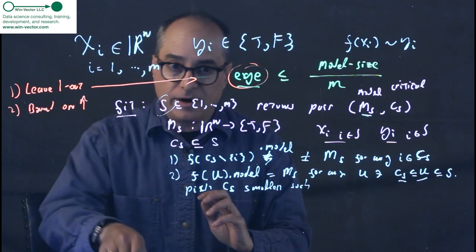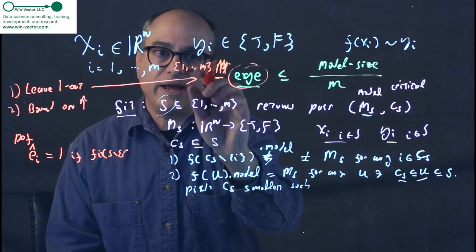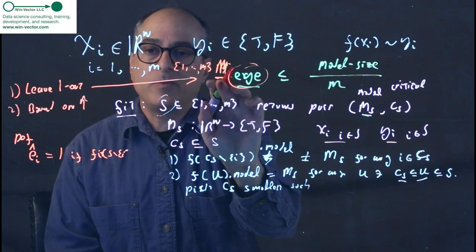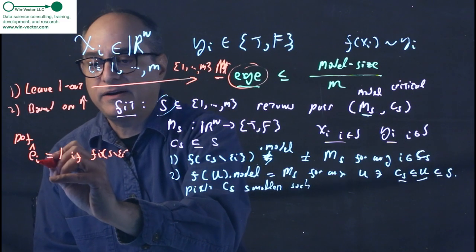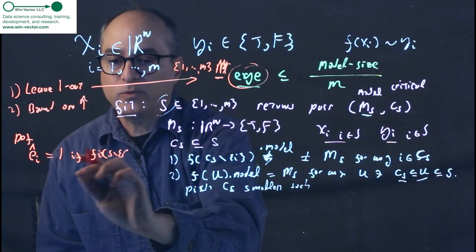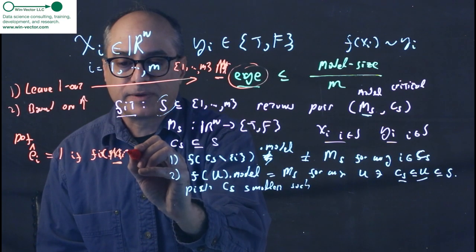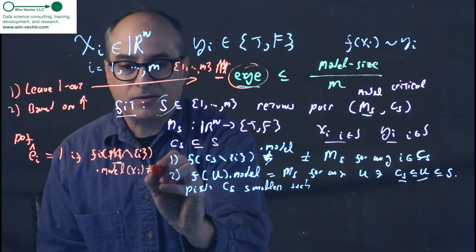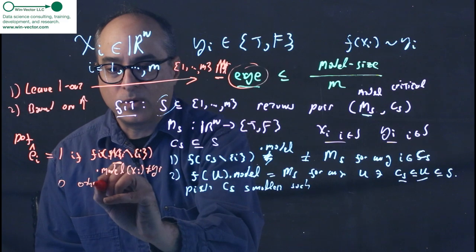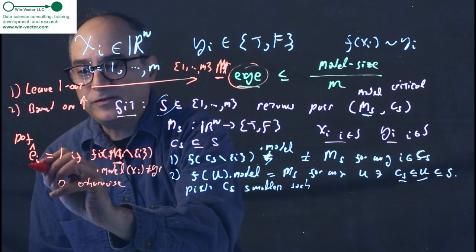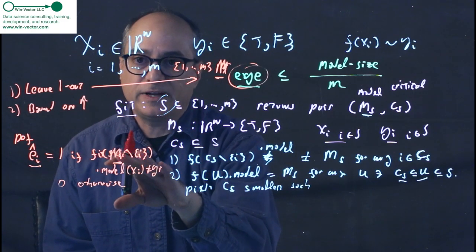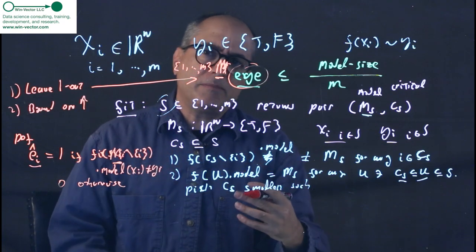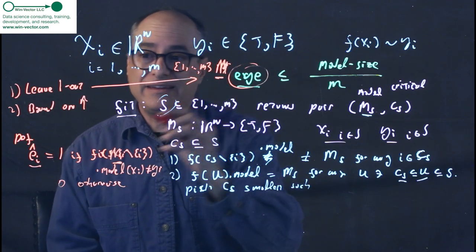Let's pretend we're doing our laborious leave one out argument. So let's call the set one dot dot dot m, m underbar, just so we have a concise way of saying that. Now we're going to define our laborious leave one out estimate as e hat i equals one if fit m underbar minus i dot model x of i doesn't equal y of i, zero otherwise. So this is just the error experienced by a leave one out procedure. The leave one out procedure fits on all of our training data except for the i throw, and then it applies itself to the i throw and sees how does this model that didn't see the i throw perform on this surprising row. This is a standard leave one out argument.